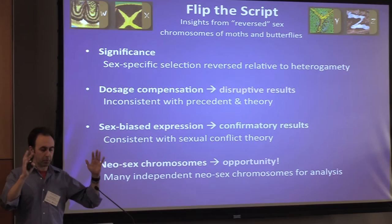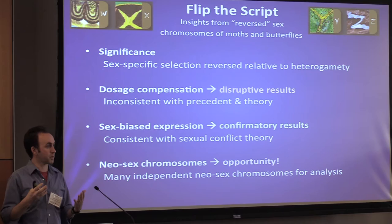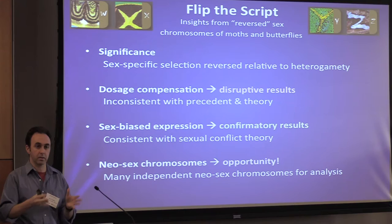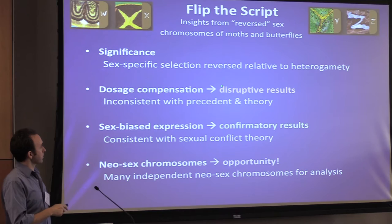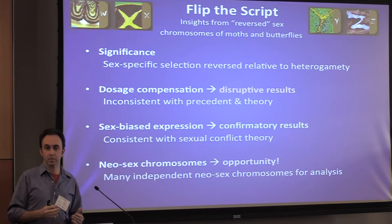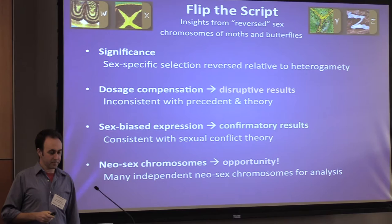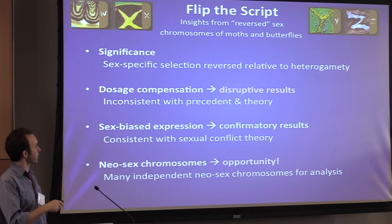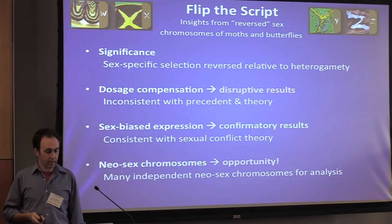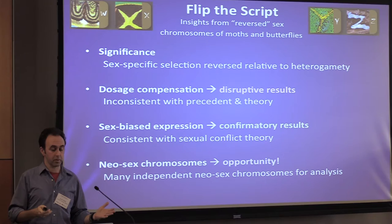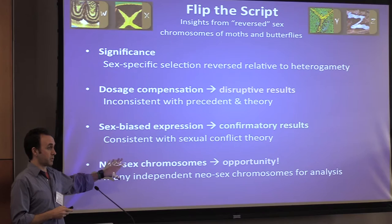To put this all together: working in female heterogametic taxa gives us the opportunity to tease apart sex-specific selection from heterogamety. In the context of dosage compensation, Lepidoptera produced a somewhat disruptive result relative to theory and precedent from other ZW taxa, though our understanding of dosage compensation is changing rapidly everywhere. Patterns of sex-biased expression on Z chromosomes versus autosomes do line up well with predictions — a nice confirmatory result. We also have more opportunities to test these things with different independently evolved neosex chromosomes.